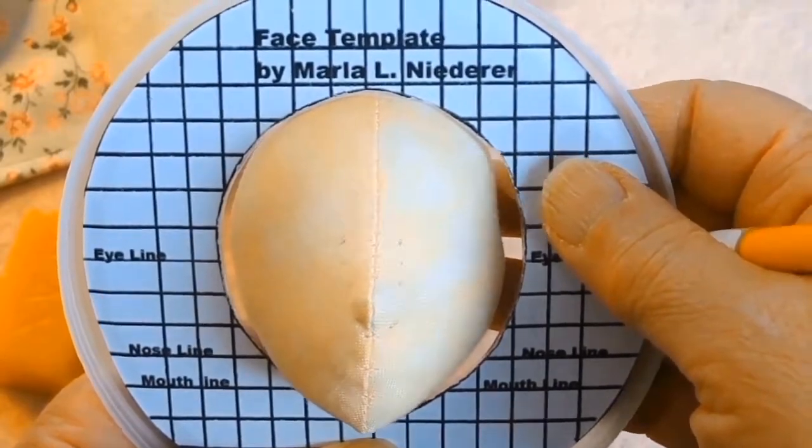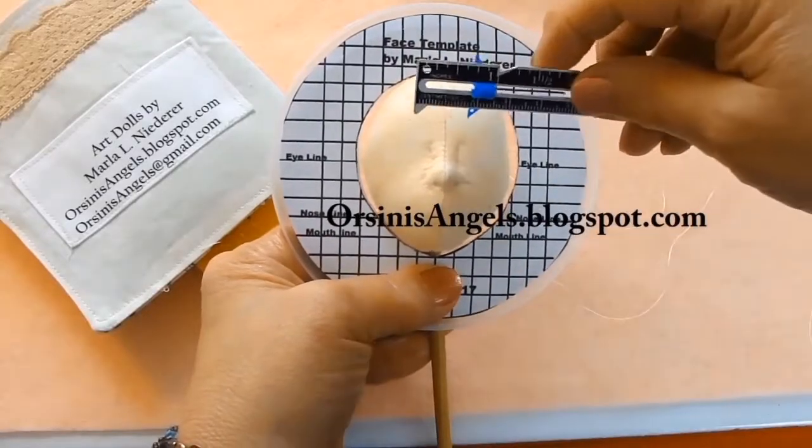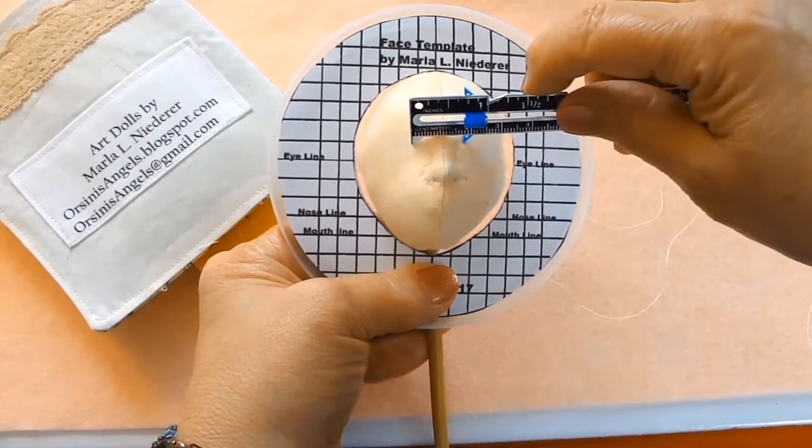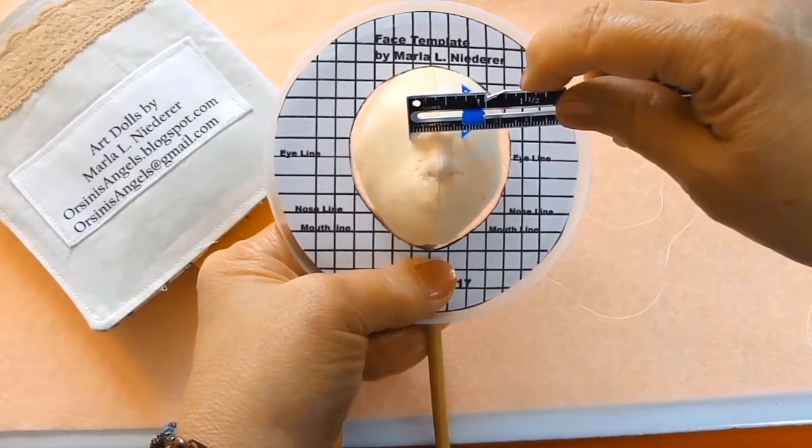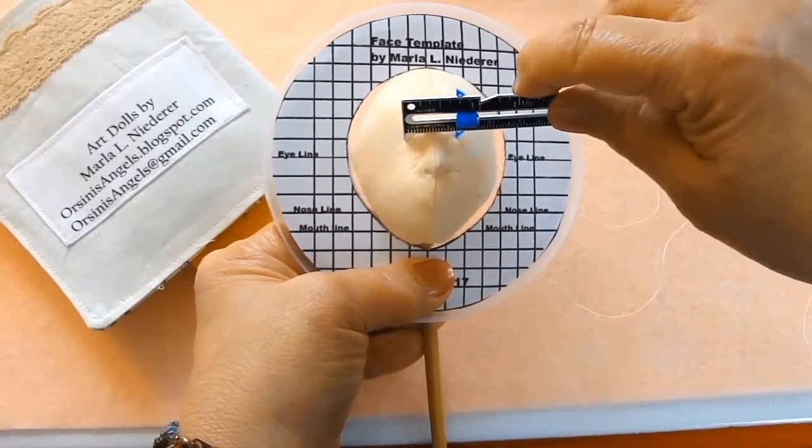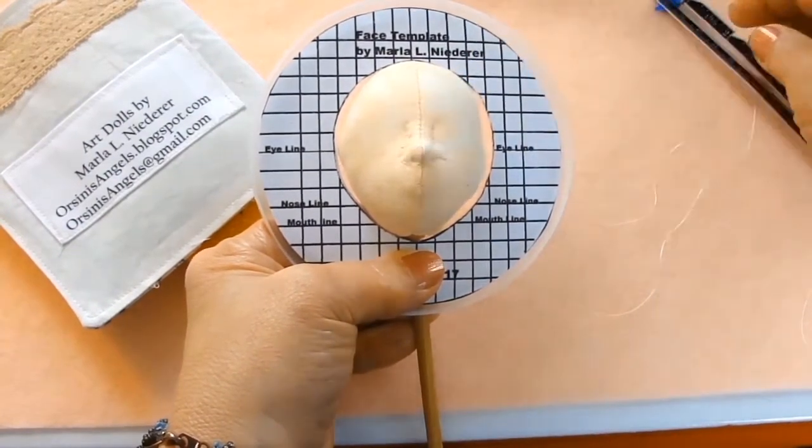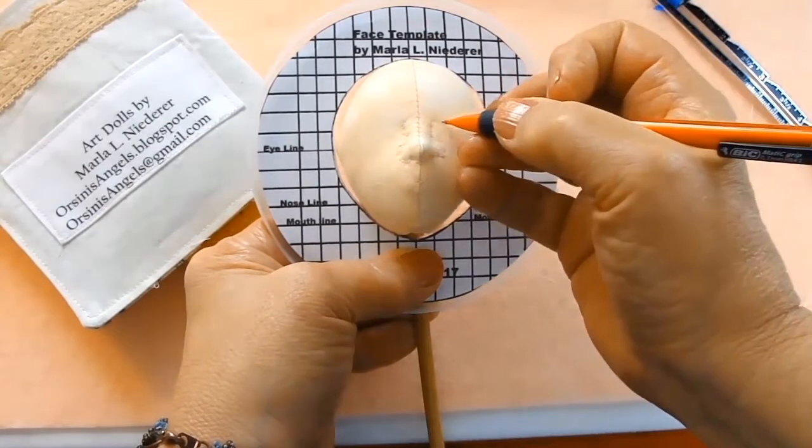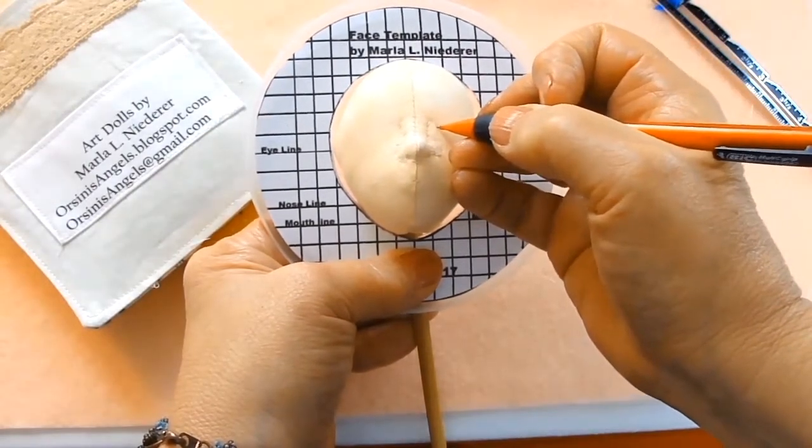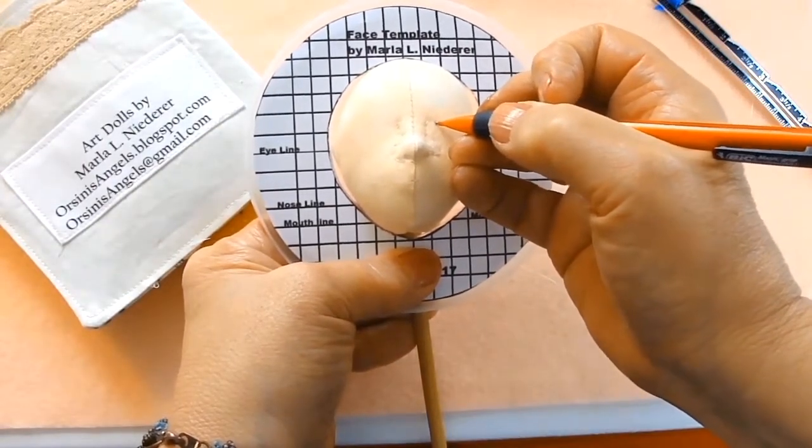The whole purpose of this is to try to have all of the facial features more symmetrical than by just eyeballing it. I do use a lot of measurements because I don't have the ability to just eyeball where everything is, so I feel more comfortable measuring them.